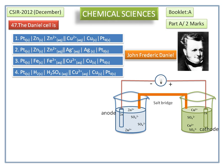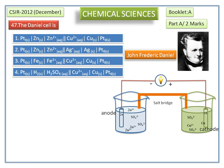As soon as the connections are completed at the anode, zinc metal is oxidized to Zn²⁺ ions which go into the solution. The electrons released at the electrode travel through the external circuit to the copper electrode, where they are used in the reduction of Cu²⁺ ions into copper, which is deposited on the copper electrode. This can be confirmed by the flow of current from cathode to anode. We can see clearly how oxidation and reduction occur at the left and right side compartments respectively.